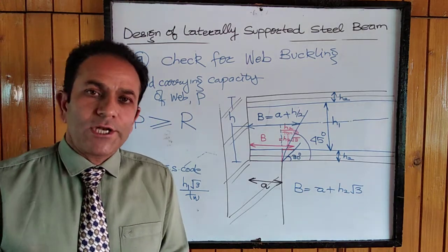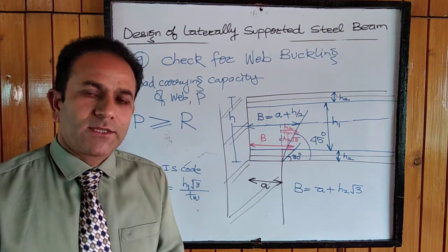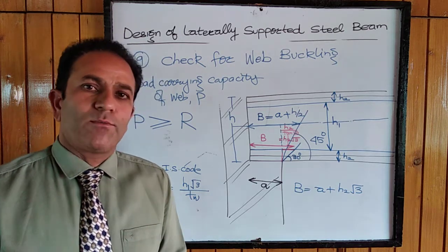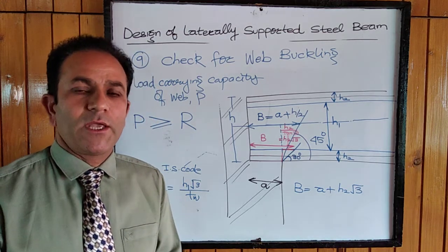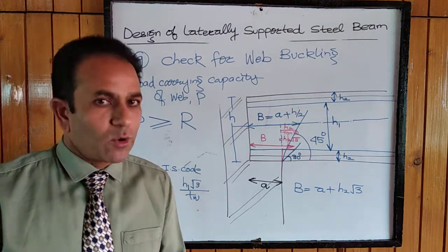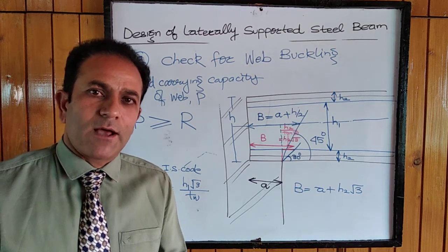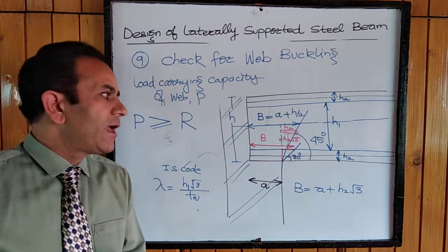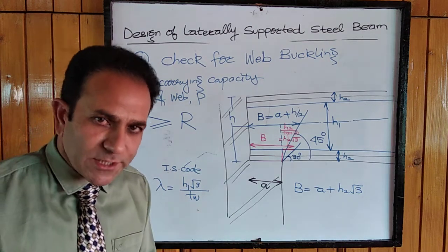To summarize the design of a steel beam: first, analyze the data — type of beam, span, supports, loads, and plan details, including beam spacing and load sharing area. Calculate the load by summing dead load from slab self-weight, flooring weight, self-weight of the beam, and superimposed load. Then calculate the bending moment accordingly.